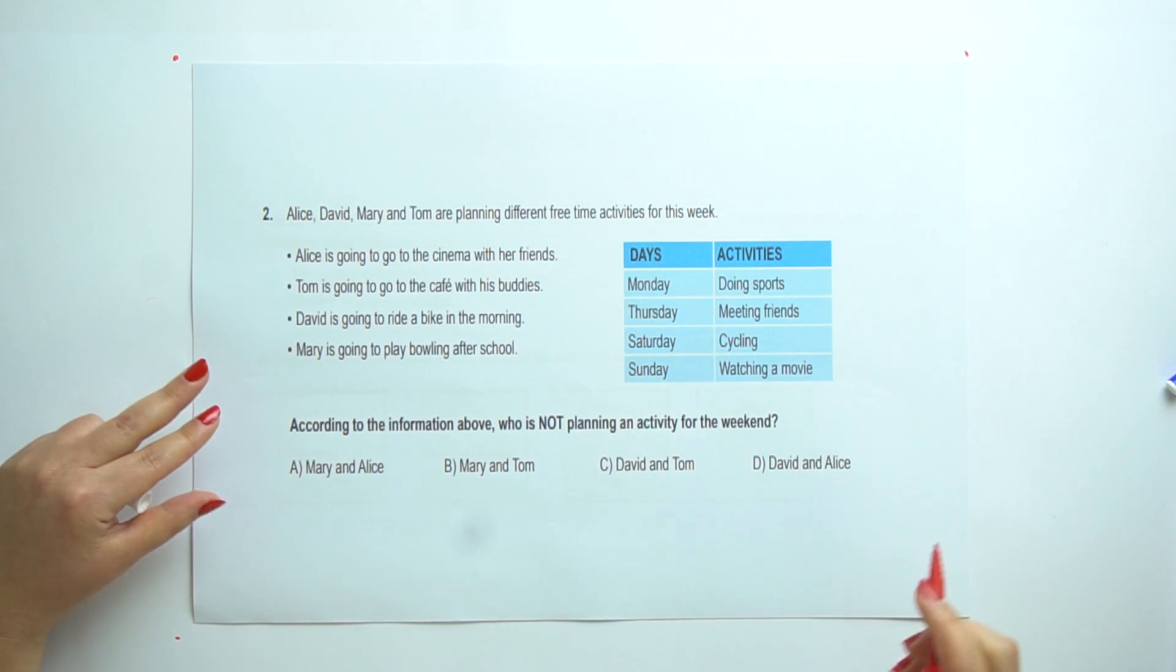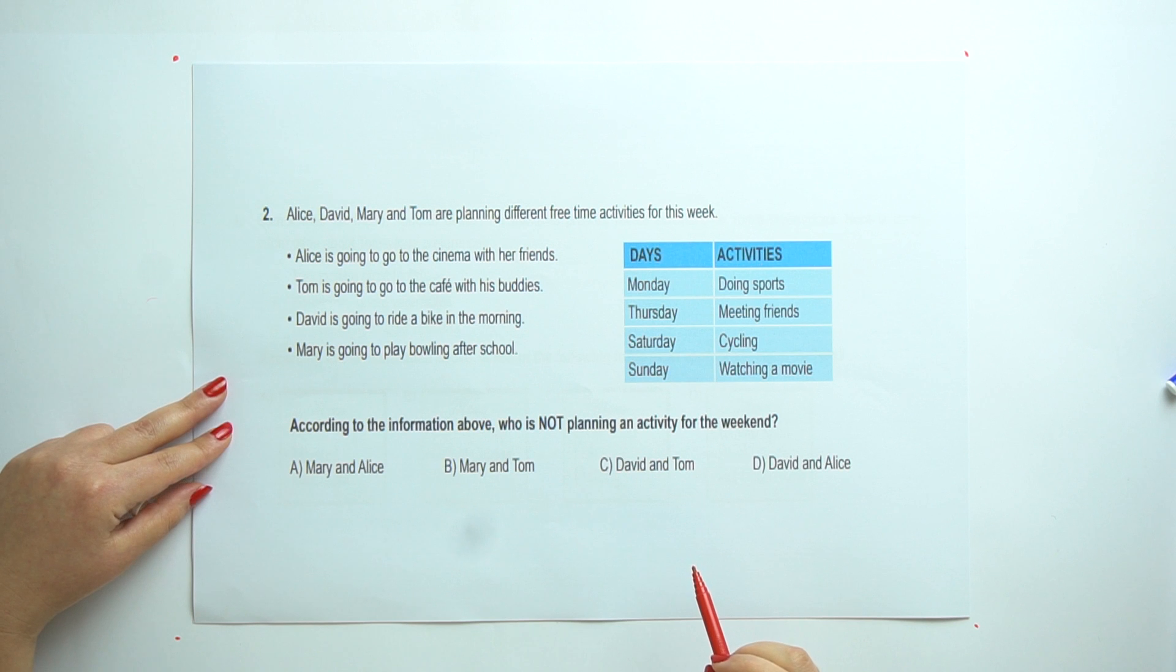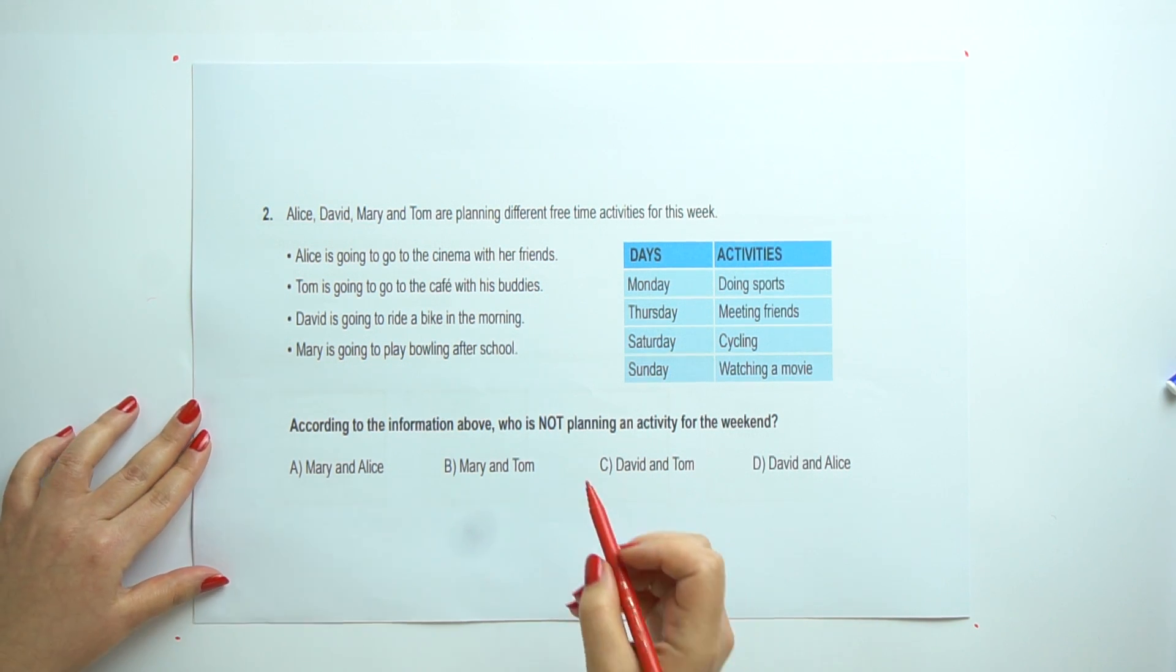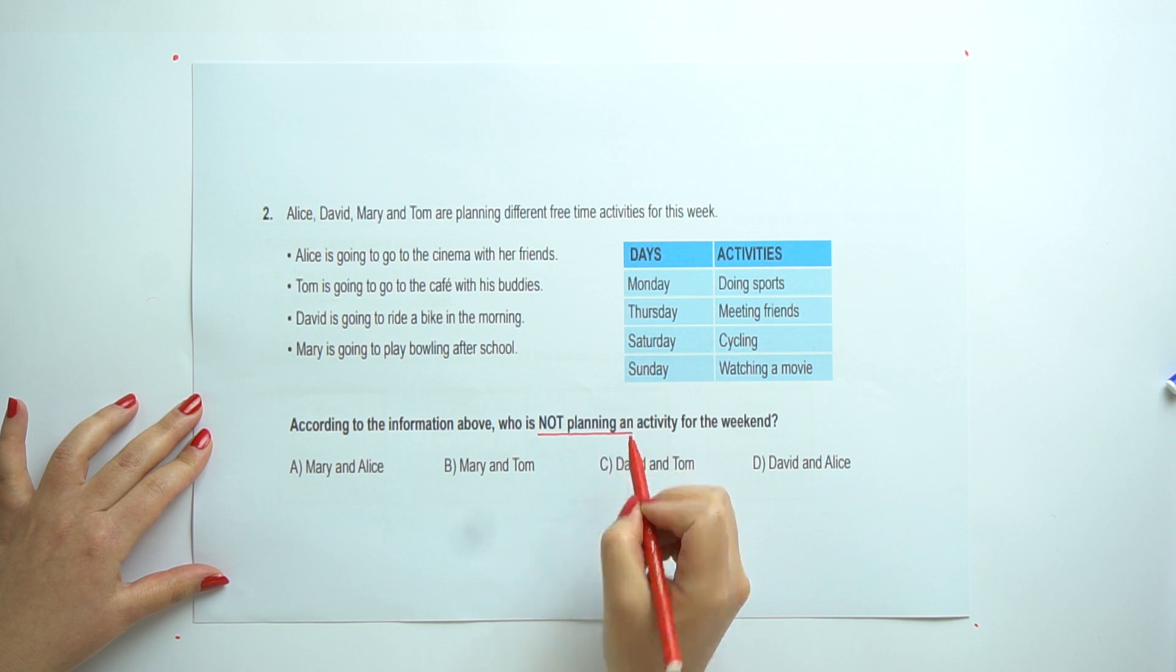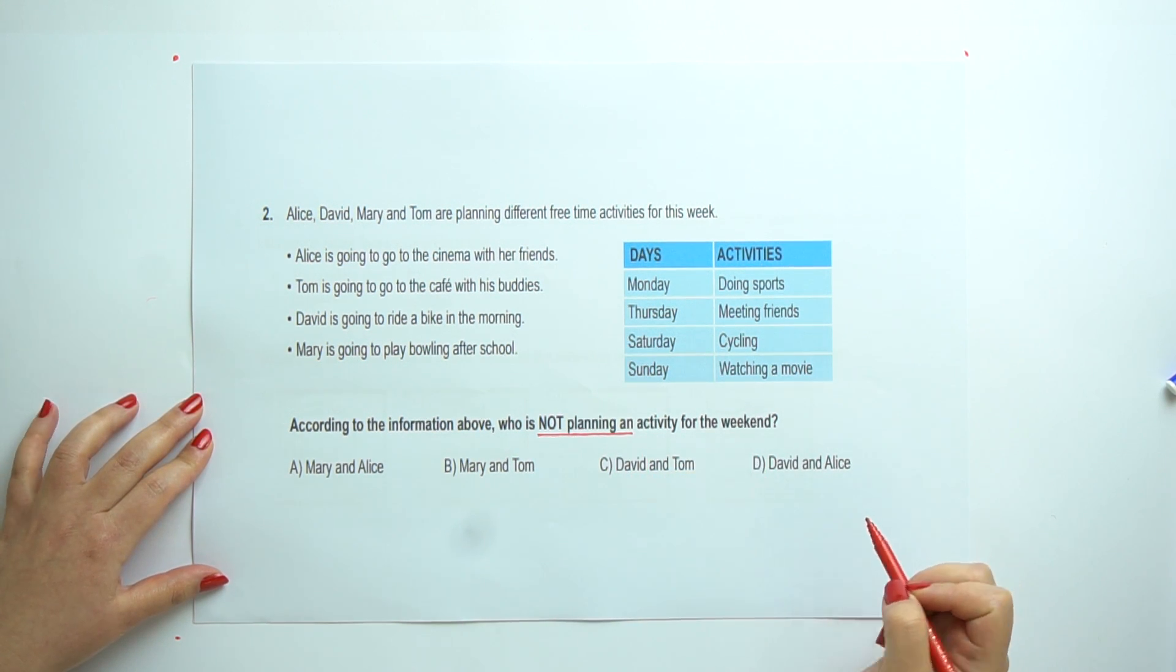Question 2. According to the information above, who is not planning an activity for the weekend? Be careful. Not planning an activity for the weekend. Alright. Alice, David, Mary and Tom are planning different free time activities for this week.